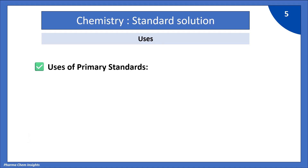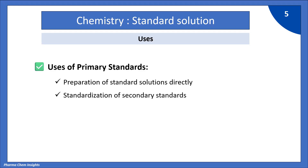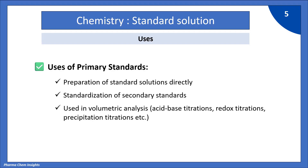Uses of primary standards: It is used for the preparation of standard solutions directly. It is used for standardization of secondary standards. It is also used in volumetric analysis for acid-base titrations, redox titrations, and precipitation titrations.